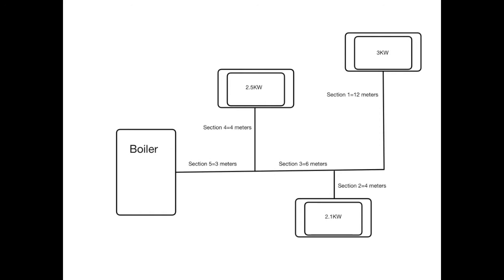Starting with the equation of mass flow rate: its function is given as the heat output in kilowatts divided by the specific heat capacity of water — a constant with a figure of 4.2 — then multiplied by the differential temperature, which is the difference in temperature between our flow and return throughout the radiator. We are going to assume a 10°C differential temperature.